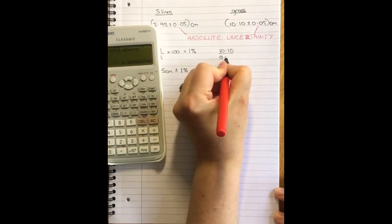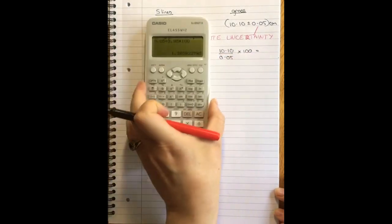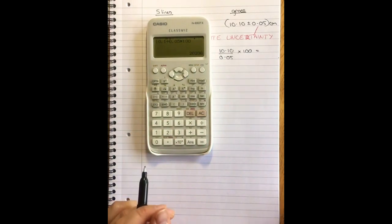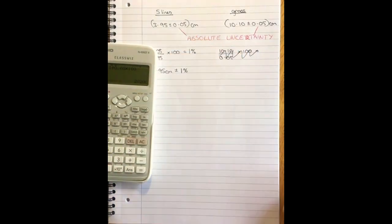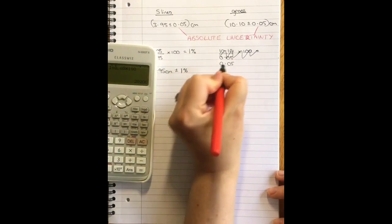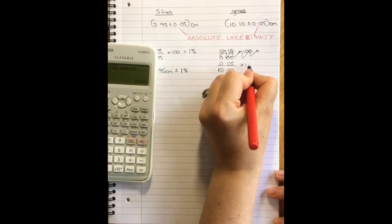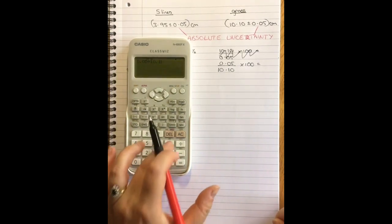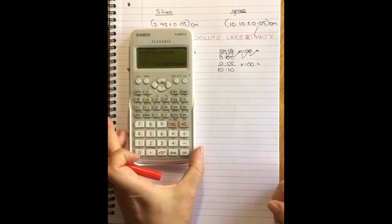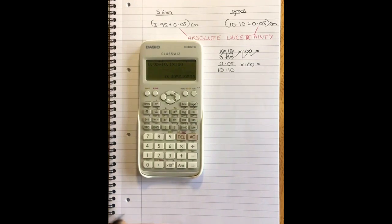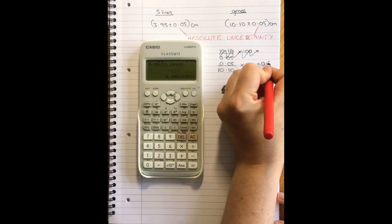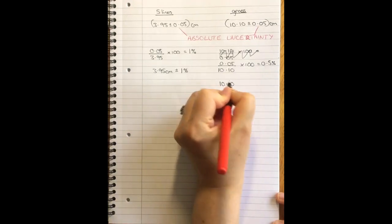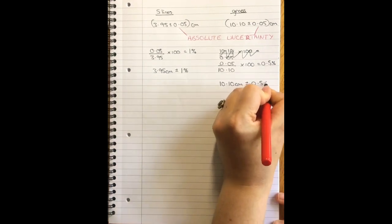Let's do it for our graphs. 0.05 divided by 10.1 times 100. So this time I've got zero point something. Again, a single significant figure, my first number and I stop. So I'm going to round that up to 0.5. So final distance there is 10.10 centimeters plus or minus 0.5 percent. These are percent uncertainties or percentage uncertainties.